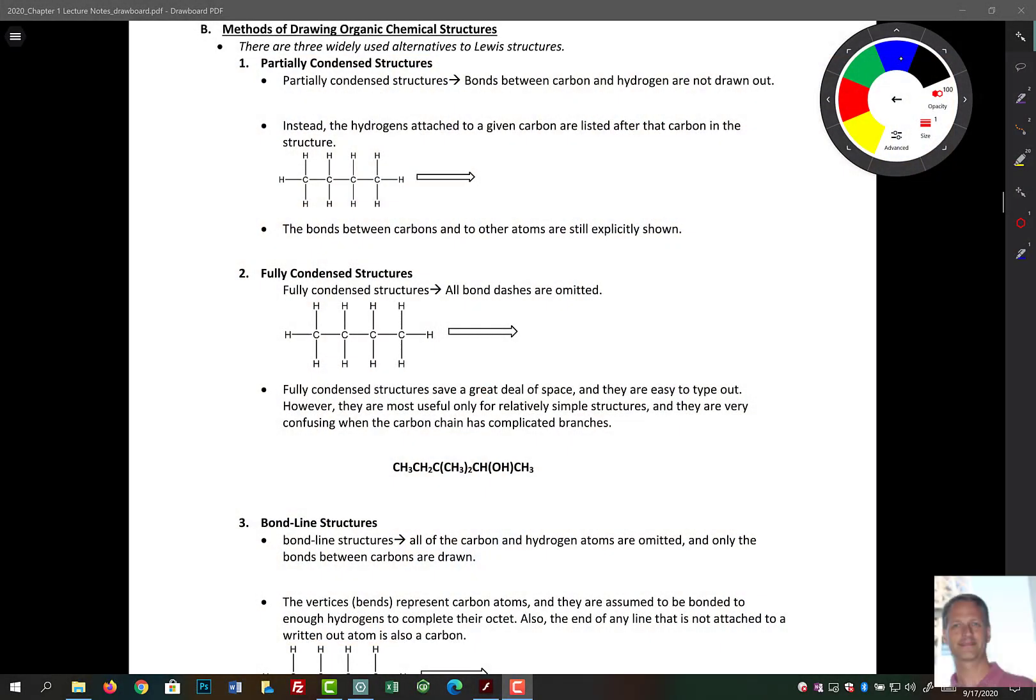Now, once we have the Lewis structure determined and we know what the shape is, we have other methods of drawing organic chemical structures. They're alternatives to your standard Lewis structures. One of the reasons why we have created these other methods is because we draw them a lot and we want a faster way to draw them sometimes. So let's take a look at the first one.